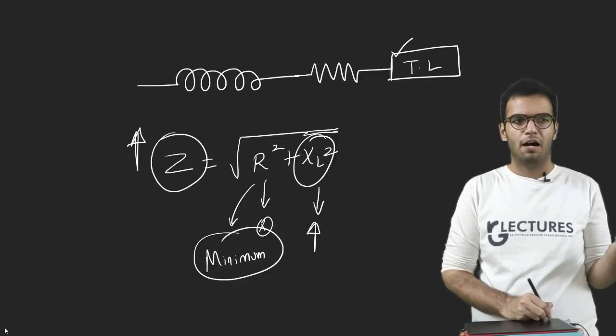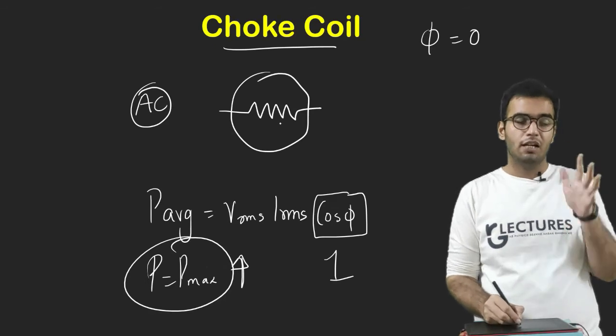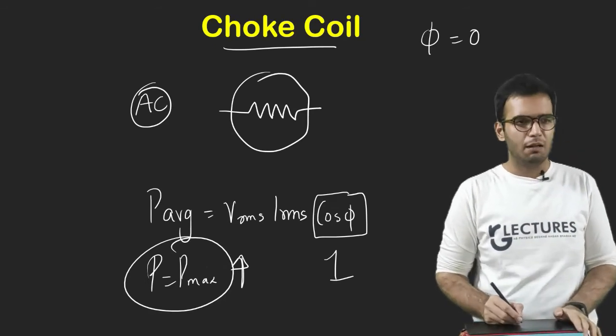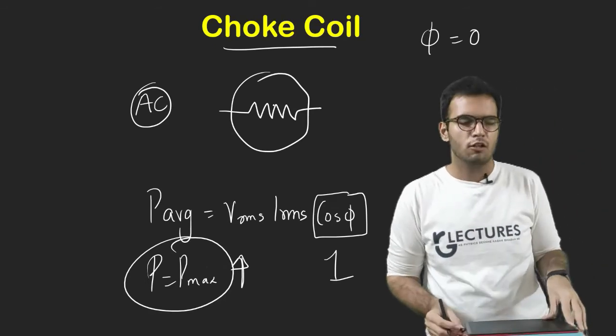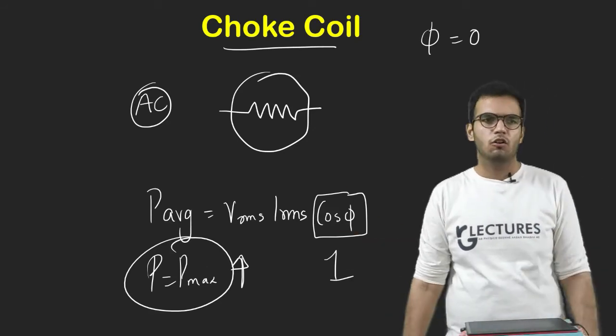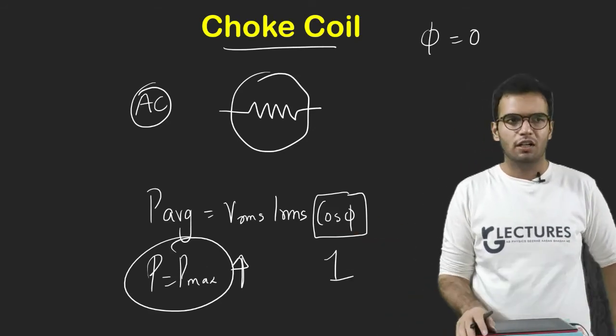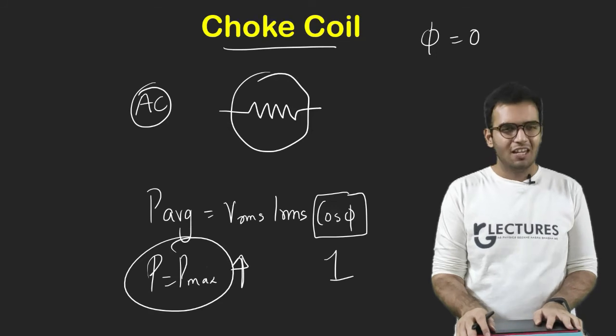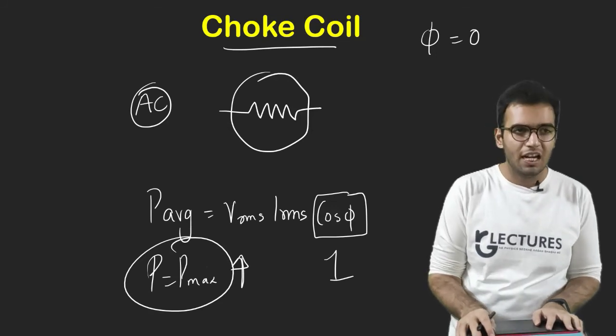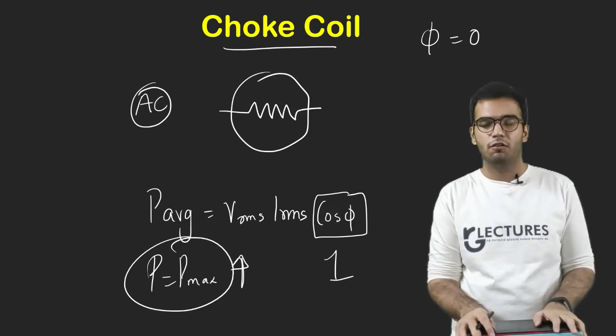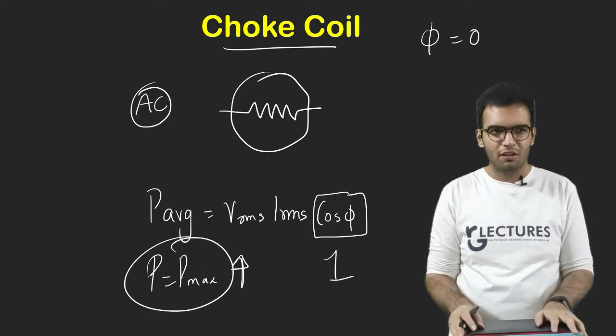We do not want the power to be maximum and be consumed by the resistance because if that happens, most of the energy will be wasted. So that is all about the concept of choke coil which we need to understand. And I think I have completed all the topics of AC circuits for the students of B.Sc. Physics.